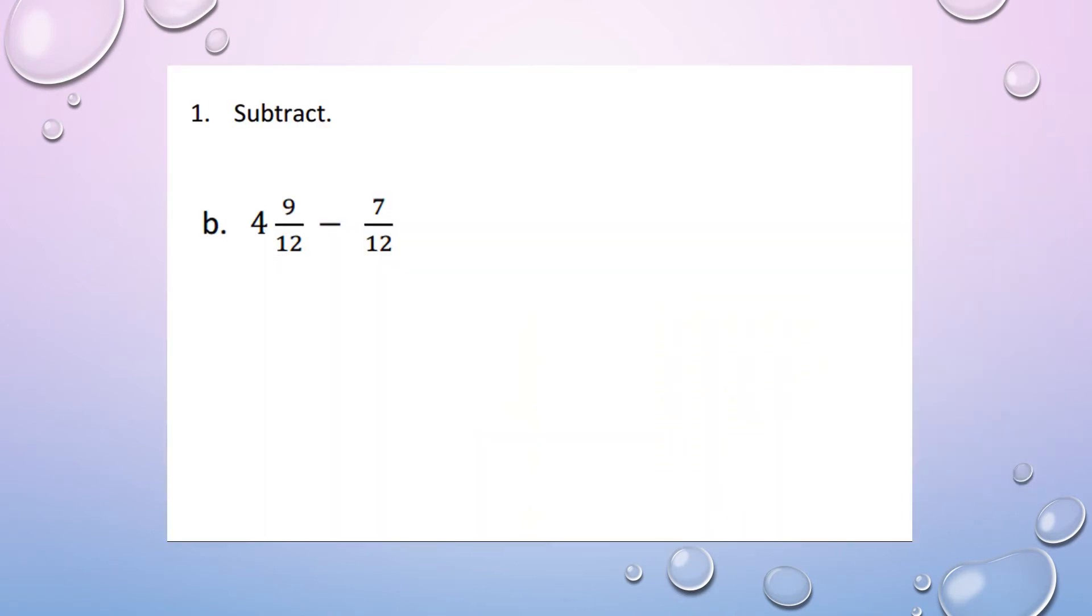So in this problem we have four and nine twelfths minus seven twelfths. So if we look, we always try to subtract whole numbers first and fractions later. So we have a whole number four, no whole number over here. So we're going to think of that as a zero. So four minus zero is four.